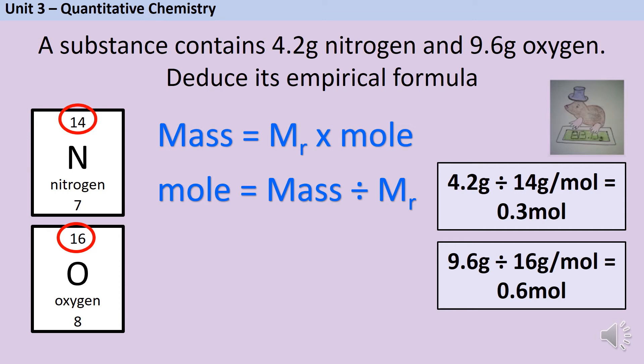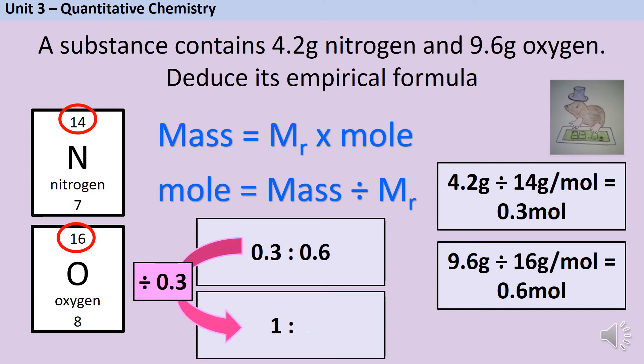So right now I have a ratio of 0.3 to 0.6 but that's not a whole number ratio so I can't use it for my empirical formula. To turn these into whole numbers I'm going to divide by the smaller of the two numbers. Any number divided by itself will be one, so 0.3 divided by 0.3 is one. Then just like in maths, whatever I do to the left hand side I need to do to the right hand side so I'm going to divide 0.6 by 0.3 as well.